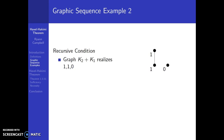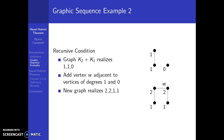We have a second graphic sequence example about the recursive condition when we add and remove vertices. Consider graph K2 plus K1 with degree sequence 1, 1, 0. We add vertex W in the upper right-hand corner, making it adjacent to vertices of degrees 1 and 0. This changes those vertices from degrees 1 and 0 to 2 and 1, so the new graph realizes the sequence 2, 2, 1, 1. If we then remove vertex W, we delete its adjacent edges and return to the sequence 1, 1, 0, 0.